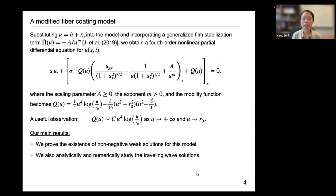In this work, we would consider a slightly modified fiber-coating model. We first substitute U being H plus R0 into the model to simplify the discussion, and we also incorporated a generalized film stabilization term pi tilde, which has been shown in earlier work to improve the comparison against experimental observations. Here, after the substitution, we get a modified fourth-order nonlinear PDE for U. And again, this is a fourth-order parabolic type degenerate PDE with the scaling parameter A and exponent M for the film stabilization term. And the mobility function Q changes its form slightly due to the substitution.